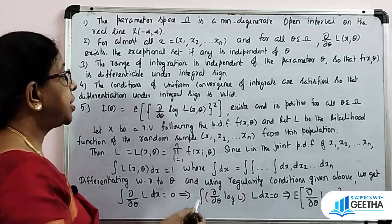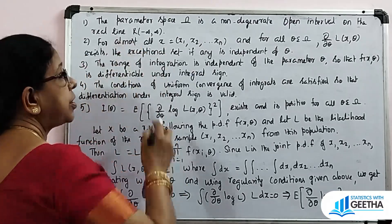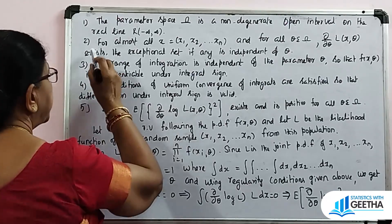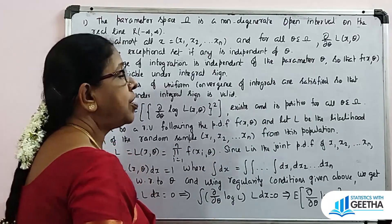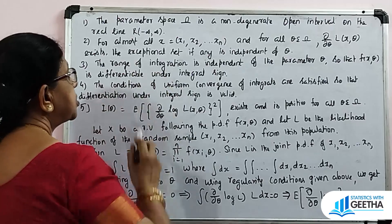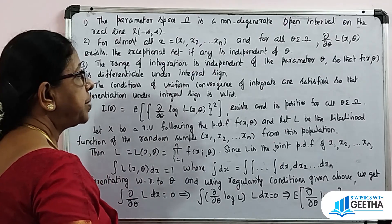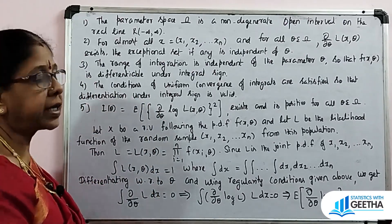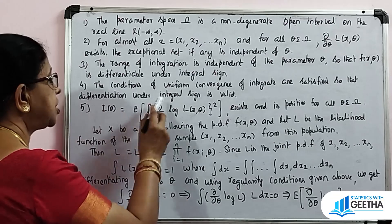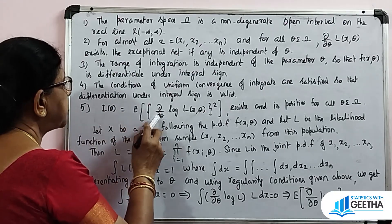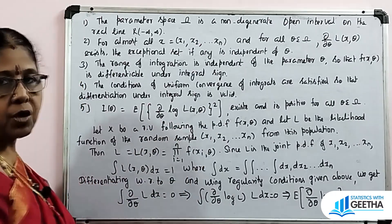The regularity conditions are: first, the parameter space omega is a non-degenerate open interval on the real line, from minus infinity to plus infinity. Second, for almost all x = (x1, x2, ..., xn) and for all theta in omega, ∂/∂θ of L(x, θ) exists, and the exceptional set, if any, is independent of theta. Third, the range of integration is independent of the parameter theta, so that f(x, θ) is differentiable under the integral sign. Fourth, the conditions of uniform convergence of integrals are satisfied so that differentiation under the integral sign is valid. Fifth, I(θ) = E[(∂/∂θ log L(x, θ))²] exists and is positive for all theta in omega.